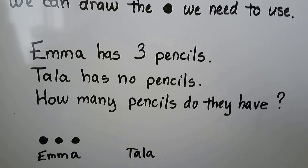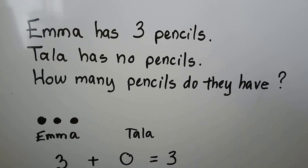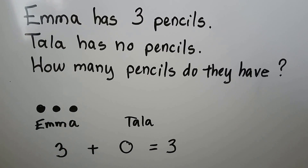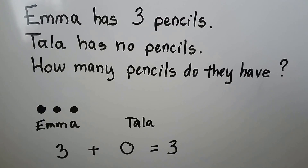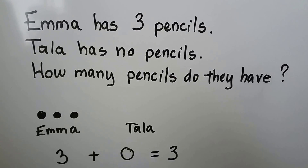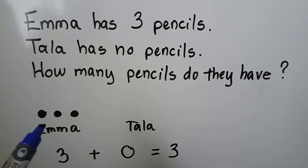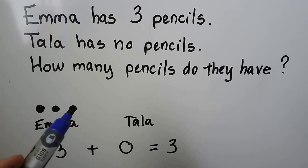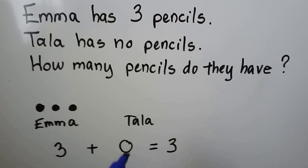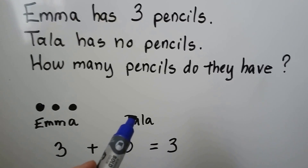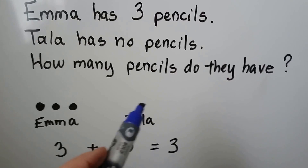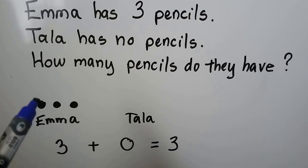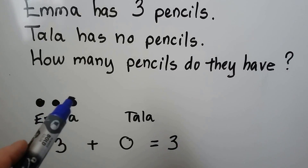Emma has three pencils. Tala has no pencils. How many pencils do they have? We can use the dots to help us. Emma has three pencils, so we make three dots. Tala has no pencils, so there are no dots. How many pencils do they have? One, two, three.